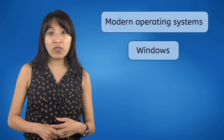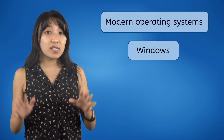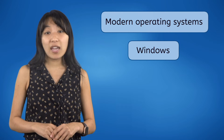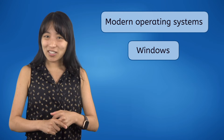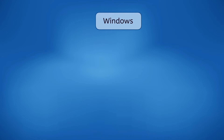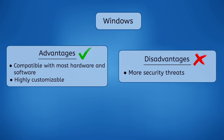The Windows series of operating systems made by Microsoft are the most commonly used in the world because most desktop and laptop computers manufactured today come pre-installed with Windows. One of the biggest advantages is its high level of compatibility with most software and hardware — you can customize or upgrade your computer with whatever applications or devices you want, and Windows can usually handle it. Unfortunately, Windows also has more security threats than any other operating system because hackers know that most computers use Windows.